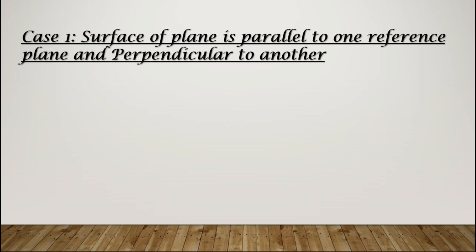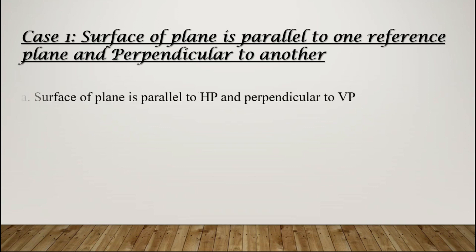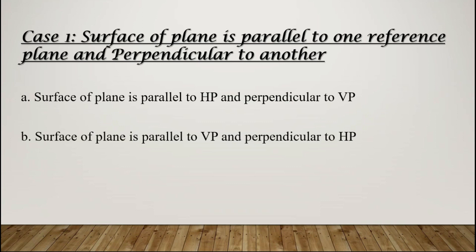In today's video we will discuss case one. In order to understand case three, you need to understand case one and case two very well. Case one — surface of plane is parallel to one reference plane and perpendicular to another — has two sub-cases: sub-case A, surface is parallel to HP and perpendicular to VP, and sub-case B, surface is parallel to VP and perpendicular to HP.